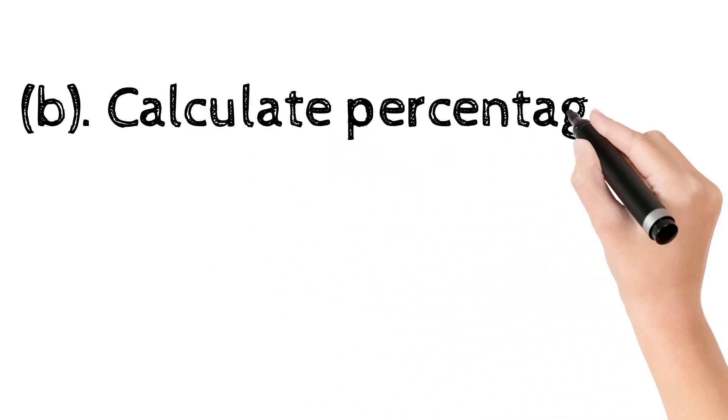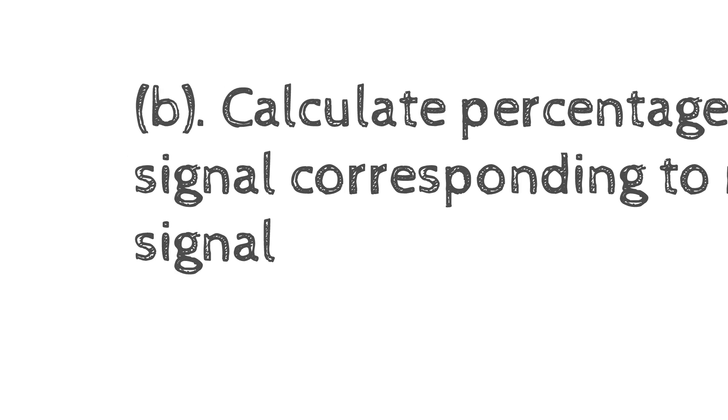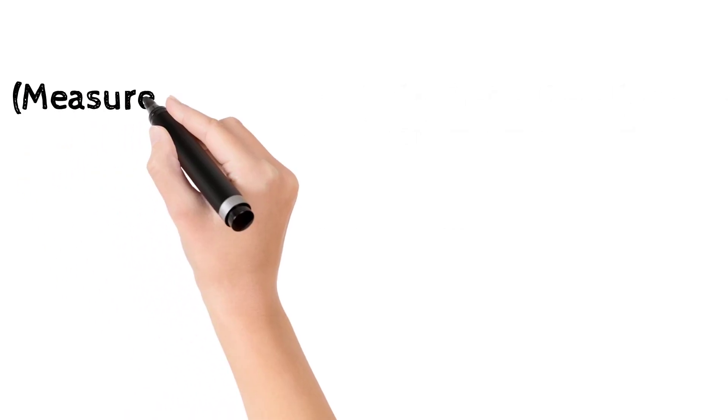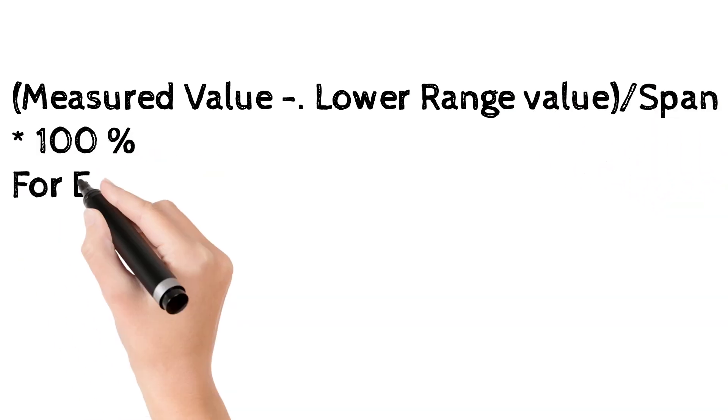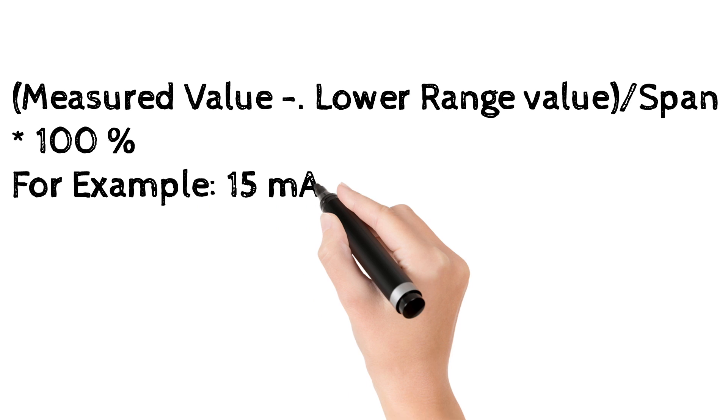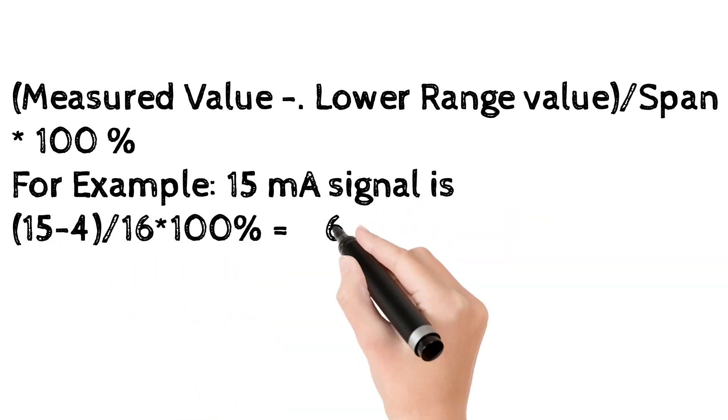2B. Calculate percentage of signal corresponding to mA signal. Measured value minus lower range value, divided by span times 100%. For example, 15 mA signal: 15 minus 4, divided by 16 times 100% equals 68.75%.